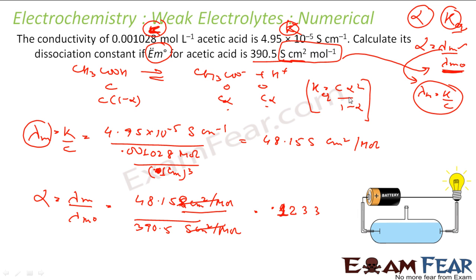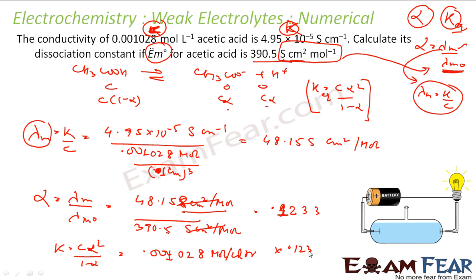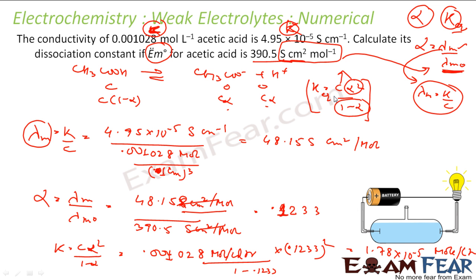Once I have alpha I can find K. K = C·α² / (1−α). C = 0.001028 mol/L, α = 0.1233. Solving: K = 1.78 × 10⁻⁵ mol/L. The unit of the equilibrium constant here is mol/L (molarity), because the alpha terms are dimensionless and only the concentration C carries the unit.